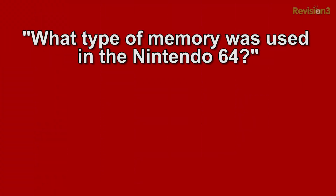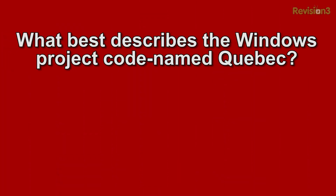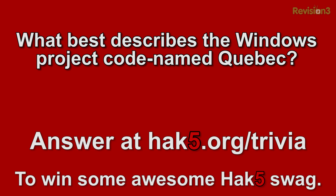It's time once again for Trivia. This week's trivia question was: what type of memory was used in the Nintendo 64? The answer is RDRAM. I totally didn't know that — it is a type of synchronous dynamic RAM. This week's new question is: what best describes the Windows project codename Quebec? You can answer that over at hack5.org/trivia for your chance to win some swag.